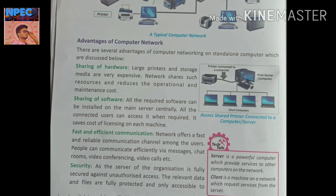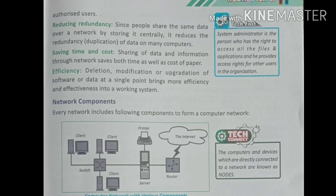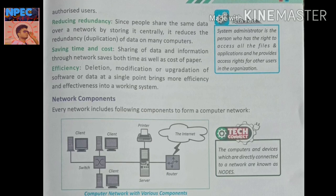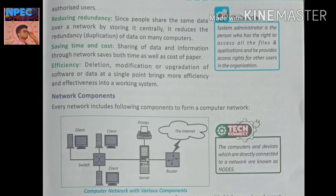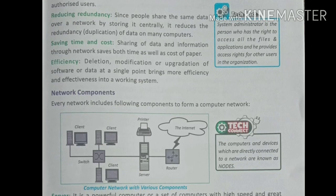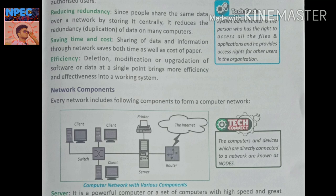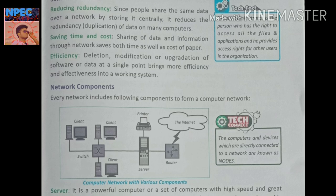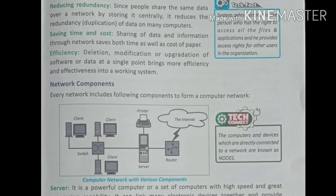Next advantage is reducing redundancy। Since people share the same data over a network by storing it centrally, it reduces the redundancy — meaning duplication of data on many computers। Network क्या करता है? बहुत सारे लोग same data network में centrally store करके share करते हैं, जिससे duplication of data को रोकता है — reduce करता है।